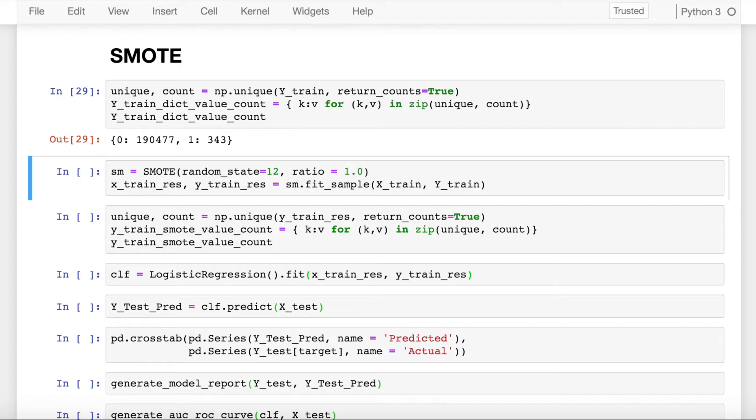In my Y train itself, I have close to 190,000 samples of class 0 and around 343 samples of class 1. So there is a clear imbalance that is there in my dataset. Now the task in hand is to perform oversampling for which we are using SMOTE. In order to use SMOTE, I'll first import SMOTE and assign it to a variable called as SM.